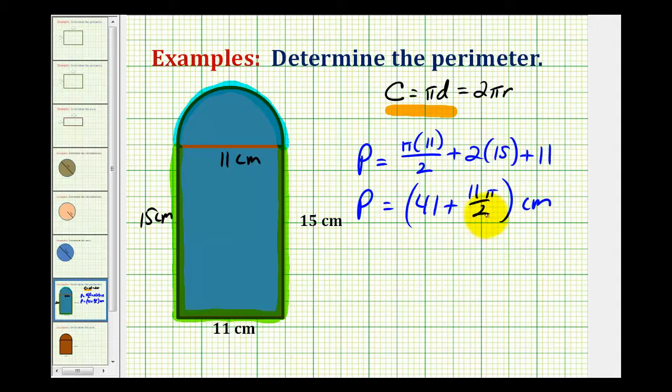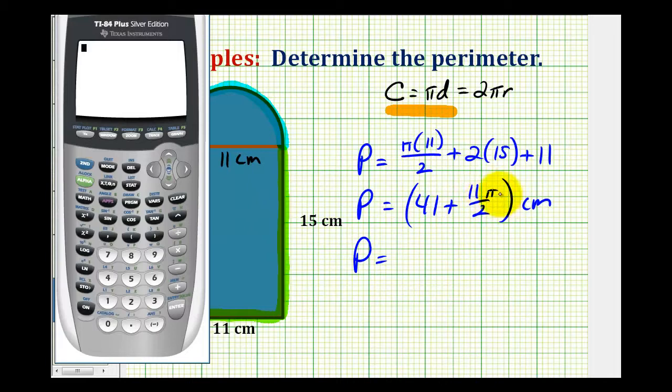Now let's go ahead and use the calculator to get a decimal approximation for this. One thing we should be aware of is that sometimes specific problems tell us to use a certain value for pi. A lot of times we're asked to use 3.14 for pi, but this calculator has a pi key, which will give us a more accurate calculation. So we'll go ahead and use the pi key on this calculator to get a decimal approximation.